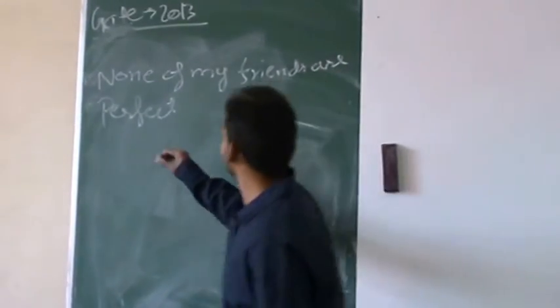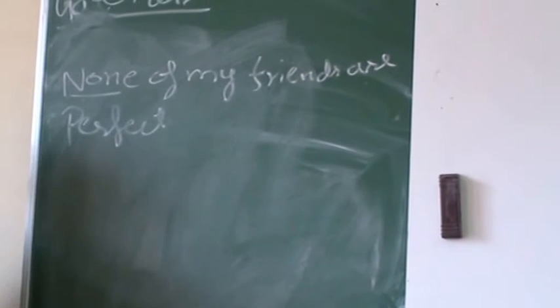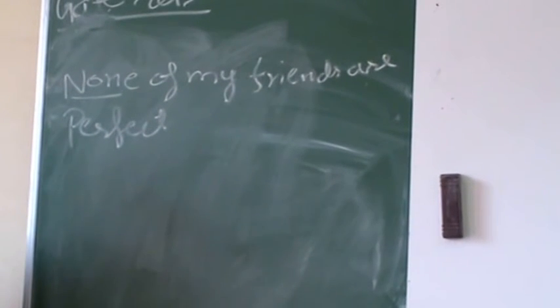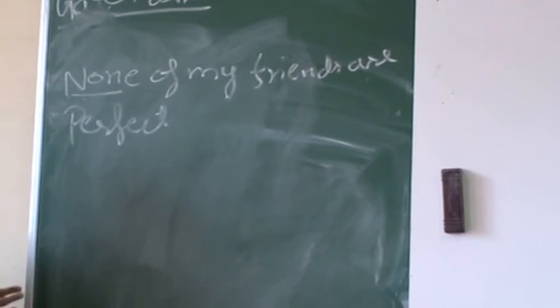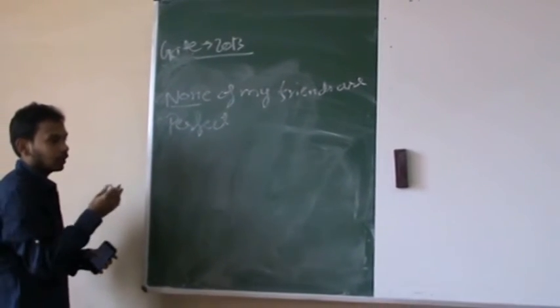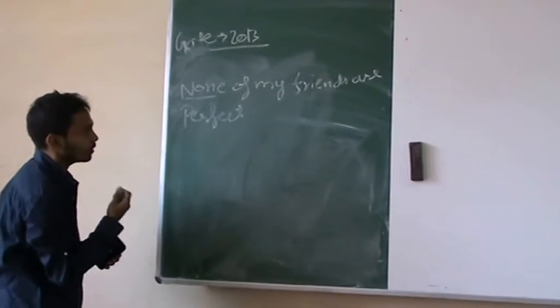So this statement here means none of my friends are perfect. That means it does not say not all my friends are perfect, but none of my friends are perfect. Not all would have been that there exists one friend that is perfect.